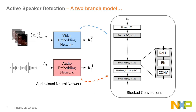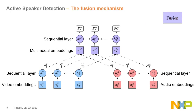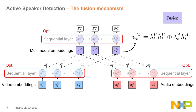Once we have these embedding vectors, we need to fuse them in fusion blocks. Reading bottom to top: video and audio embeddings are fed to sequential layers, whose hidden states are combined into multi-modal embeddings — usually via concatenation, but addition can also be used. On top of the fusion, another sequential layer can be added, followed by a fully connected layer for classification. Sequential layers are optional and can be used for any combination of the multimodal fusion, video, or audio branches.